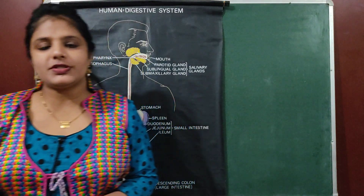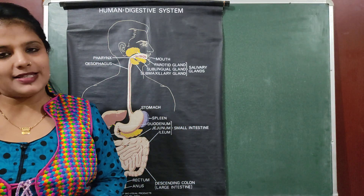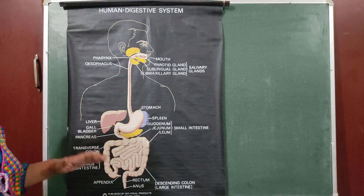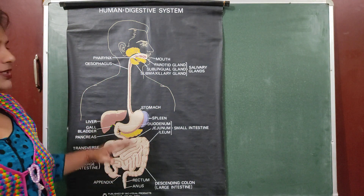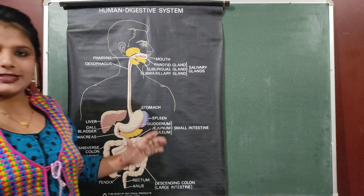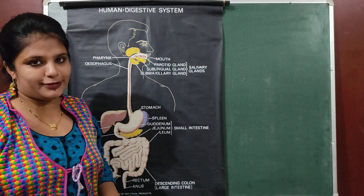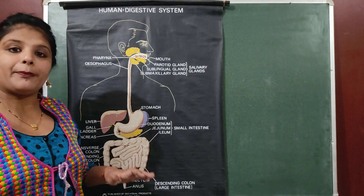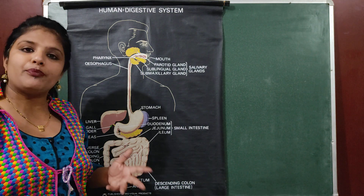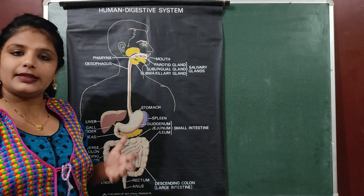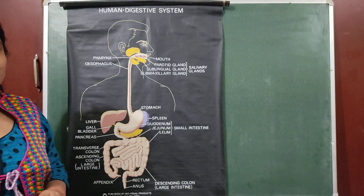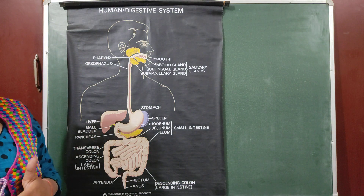Today the topic which we are going to discuss is the digestive system. First we will understand the diagram of the digestive system — this is the model of the digestive system which we are going to understand. We will understand all the parts, their importance, their function, their location, and after that we will go into detail about the detailed functioning.